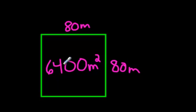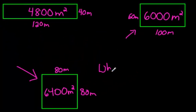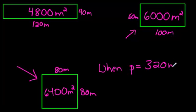Did you notice that this one has the most area that you can get out of a perimeter of 320 meters? So, when the perimeter was 320 meters, then the maximum, that means the most, the maximum area that you can enclose in a rectangular shape is...